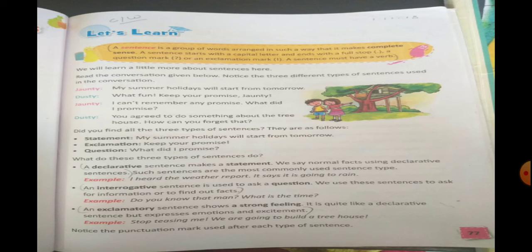A declarative sentence makes a statement. When you are declaring something, that is called a declarative sentence. We say normal facts using declarative sentences. In our day-to-day life the language we use for conversing with friends or relatives, we generally use declarative sentences. Such sentences are the most commonly used sentence type. For example: I heard the weather report, full stop. It is going to rain, full stop. So these are declarative sentences.